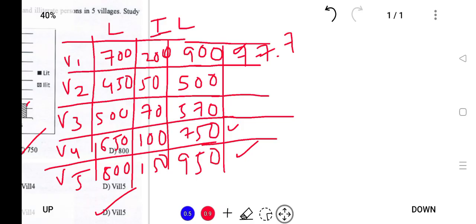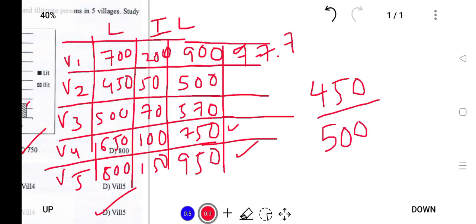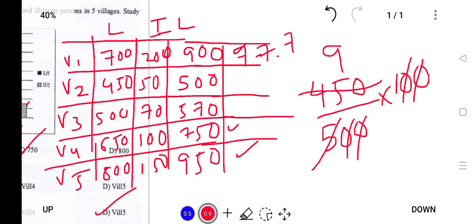Village 2: 450 divided by 500, multiplied by 100. This equals 90 percent. So Village 2 has a literacy rate of 90%.